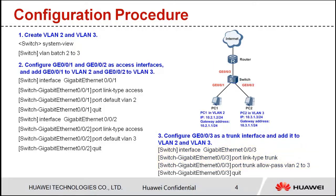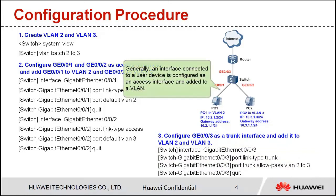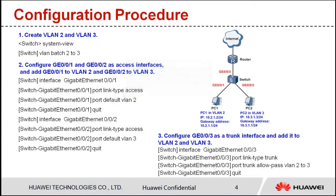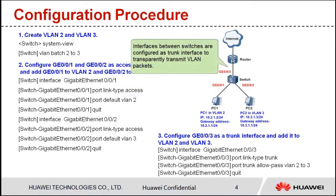The switch configuration is complete. Generally, an interface connected to a user device is configured as an access interface and added to a VLAN. Interfaces between switches are configured as trunk interfaces to transparently transmit VLAN packets.